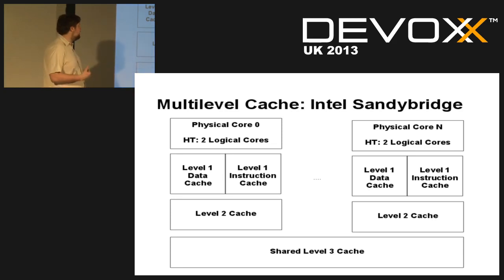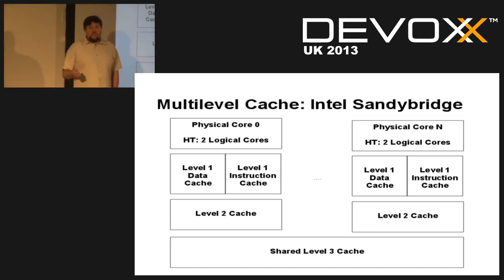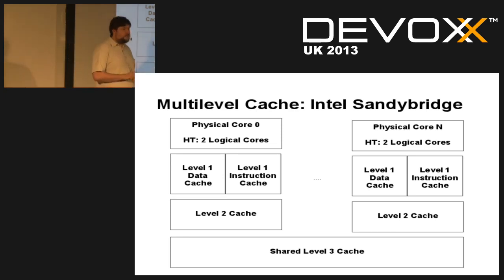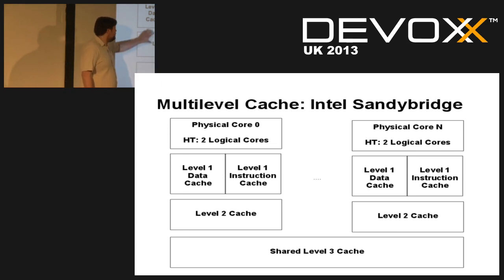Over time, people realized this economic trade-off can be applied to multiple layers. Sandy Bridge chips have multiple physical cores — for example, this laptop has four physical cores, each with two logical cores (hardware threads). Each core is fed by a level-one cache split into data and instructions. Below that is a per-physical-core level-two cache. Level-three cache is shared between all cores, which is important for software tuning since it's a shared hardware resource between multiple threads.